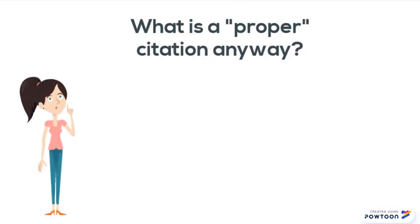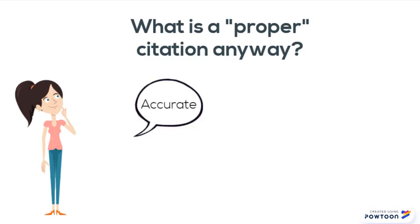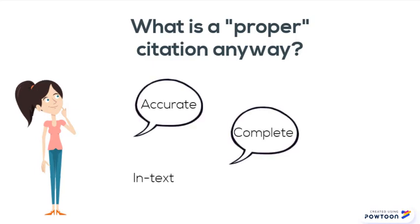But what do we mean by proper citations? Proper citations will be accurate and complete — both the in-text citations that you include in the body of your paper, and at the end, in your list of references.